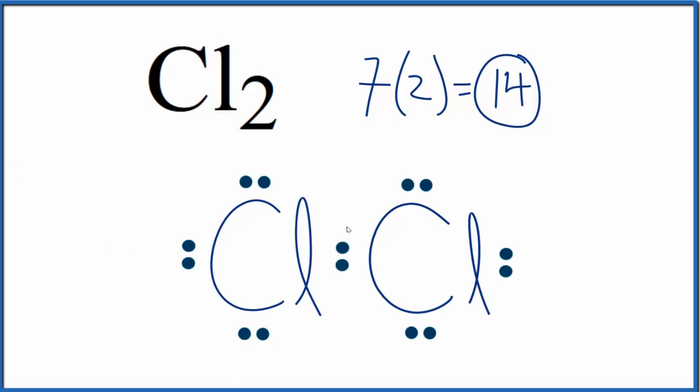Sometimes you'll see this pair of electrons here replaced with a line. The line represents the chemical bond. It means we have two electrons here shared between each chlorine atom.